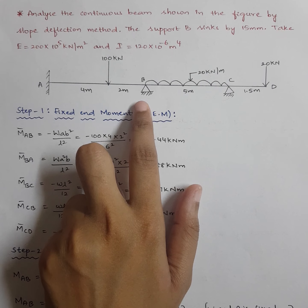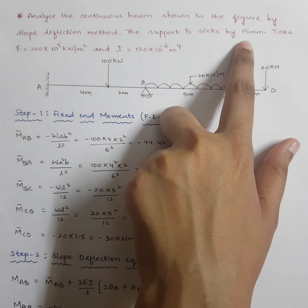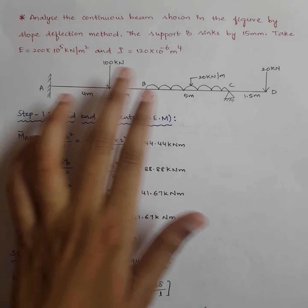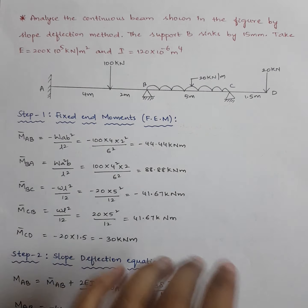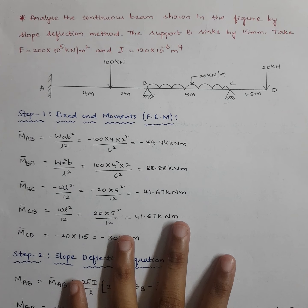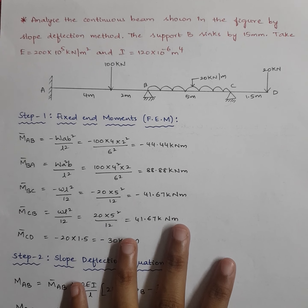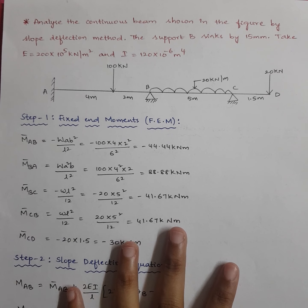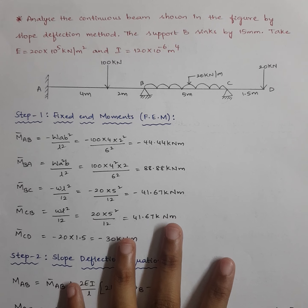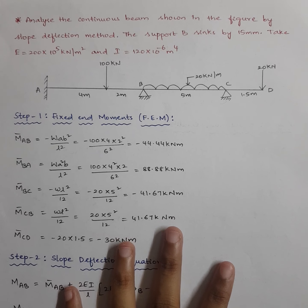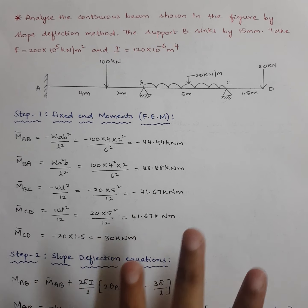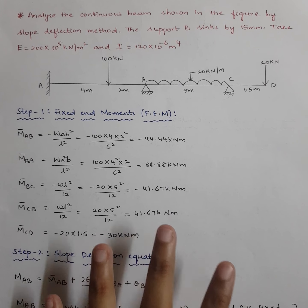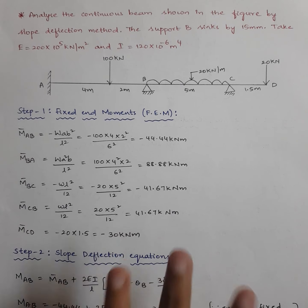The support B is sinking down with 15 mm of displacement. The values of E and I are given. Analyzing this means we need to calculate the final moments and the net bending moment. Let's start off with the problem — in the slope deflection method, our first step will always be writing the fixed end moments.